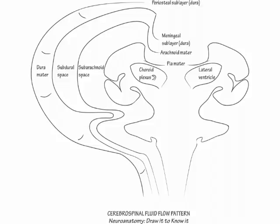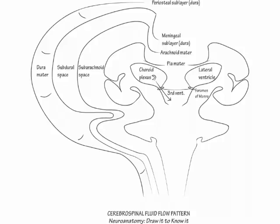Show cerebrospinal fluid empty through the paired foramina of Monroe into the third ventricle, and then into the cerebral aqueduct, then into the fourth ventricle, and finally down the central canal.